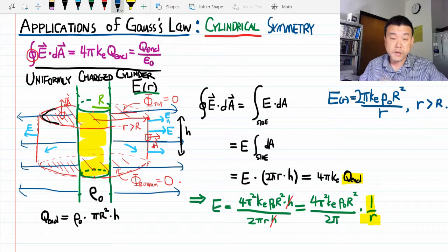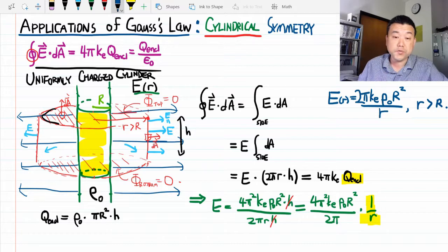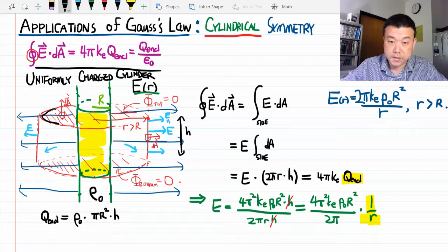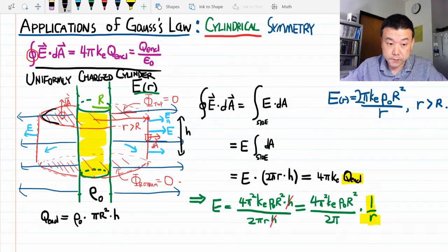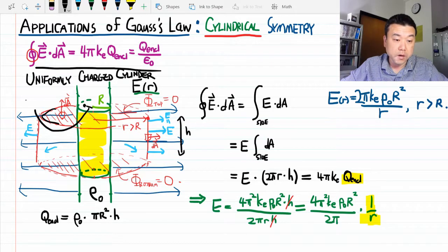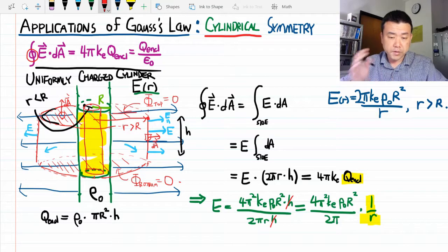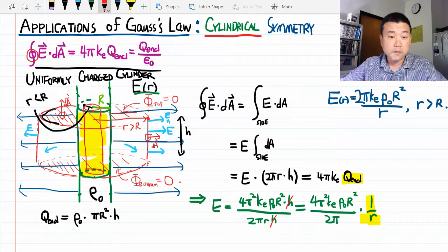We derived all this using integration over the charge distribution. What's new here is the exact same situation we looked at for the sphere: what would be the electric field for a point inside the cylinder? We're looking at where the radius of the Gaussian surface is less than the radius of the charge distribution. Let's step through the calculation and see what changes.